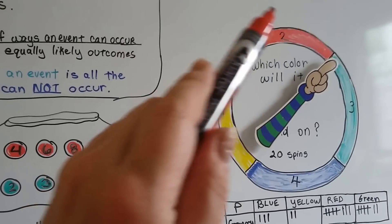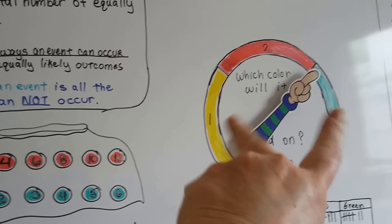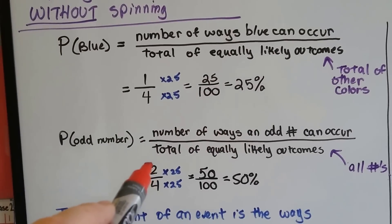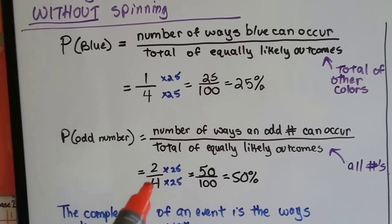Now I also put numbers on them. If you can see, one, two, three, four. One and three are odd. Two and four are even. So it's got two chances that it could land on an odd number out of four numbers. Which is 50% of the time.